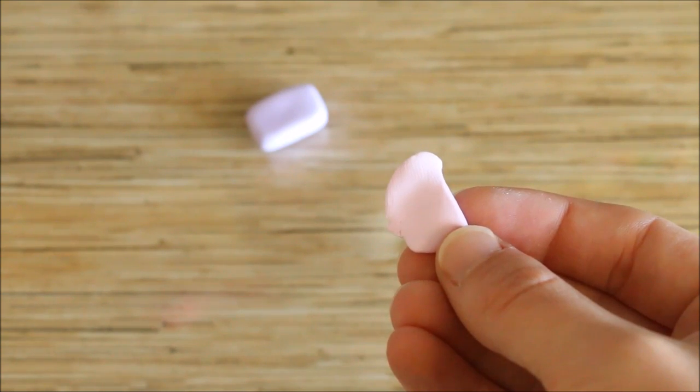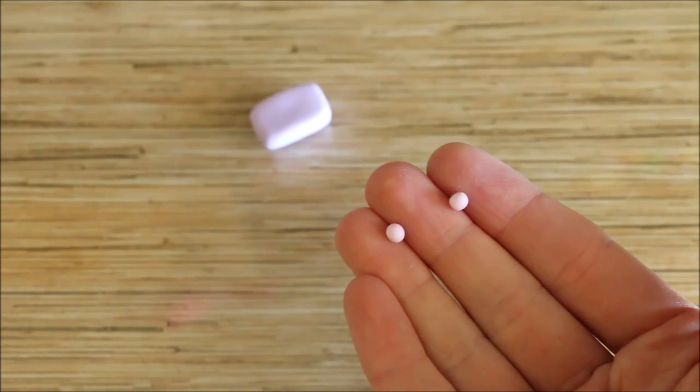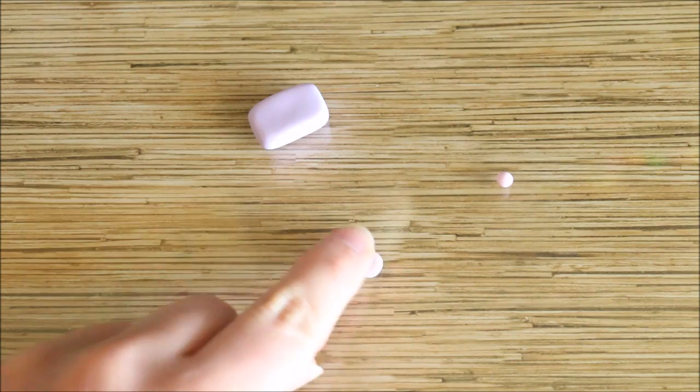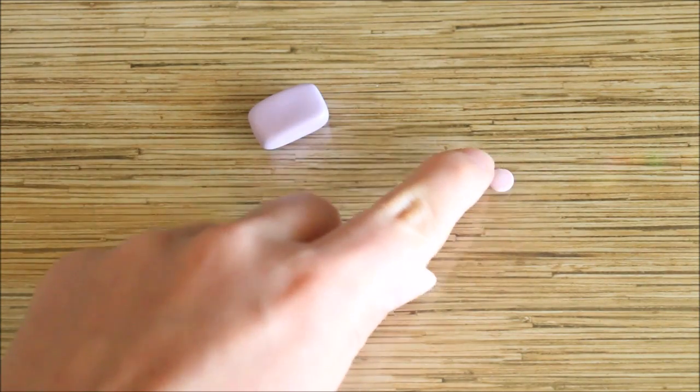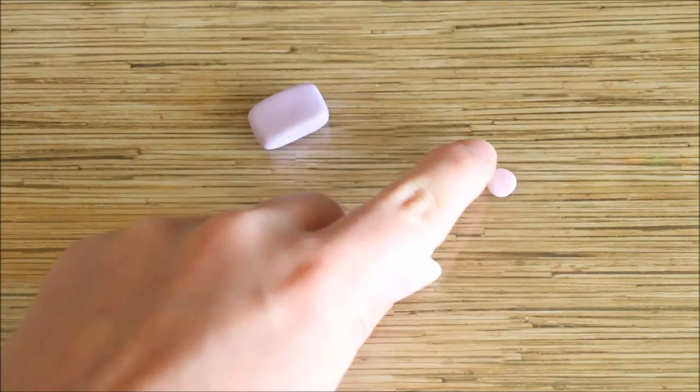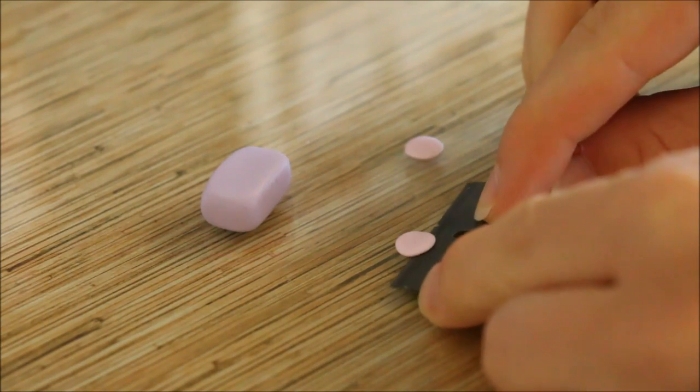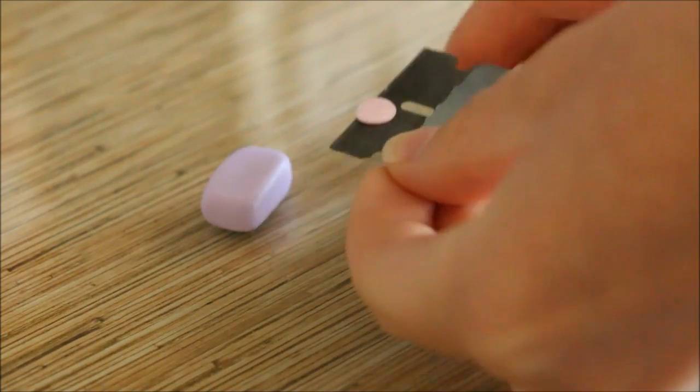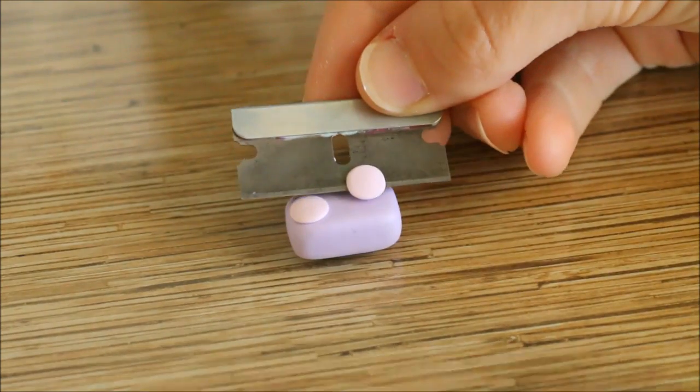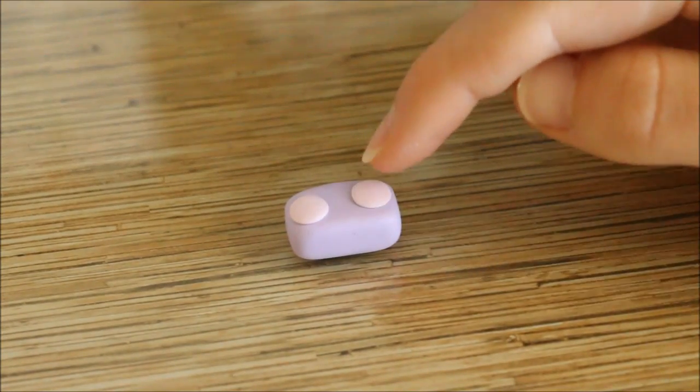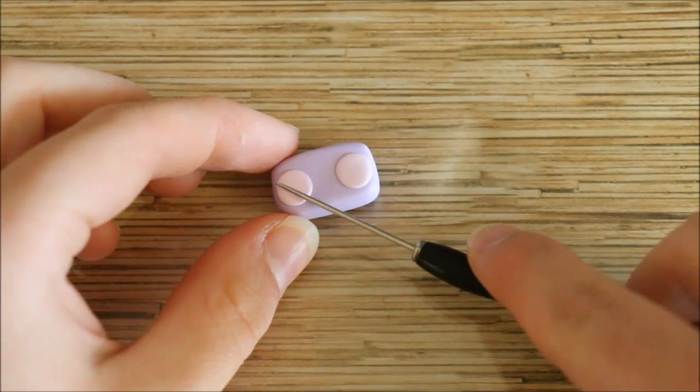Next I took some light pink clay which I'll use to make the speakers. Roll out two pieces into a ball and then flatten these down onto your work surface using your finger, or you can use a clay roller if you wish. I then positioned them on either side of the radio and then took my needle tool and made some criss-cross indents on each of them.